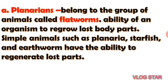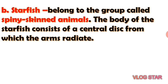Planarians can also reproduce using sexual reproduction. Next is starfish. Starfish belong to the group called spiny-skinned animals. The body of the starfish consists of a central disk from which the arms extend. Starfish feed on oysters, but oyster harvesters used to try to destroy starfish by cutting them into pieces and tossing the pieces back into the water.